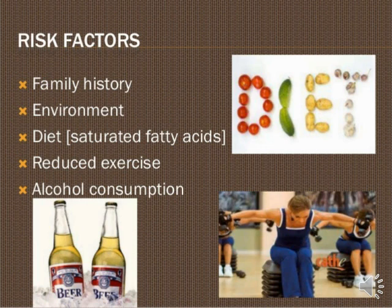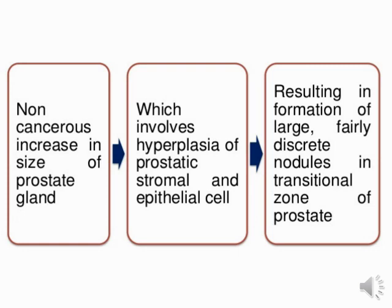Now let's see the pathophysiology of BPH. Firstly, non-cancerous epithelial cells over the prostate gland increase, leading to further hyperplasia of the prostatic stromal and epithelial cells. This results in the formation of large, fairly discrete nodules in the transitional zone of the prostate, which are the nodules that affect the epithelial and stromal parts of the prostatic gland.